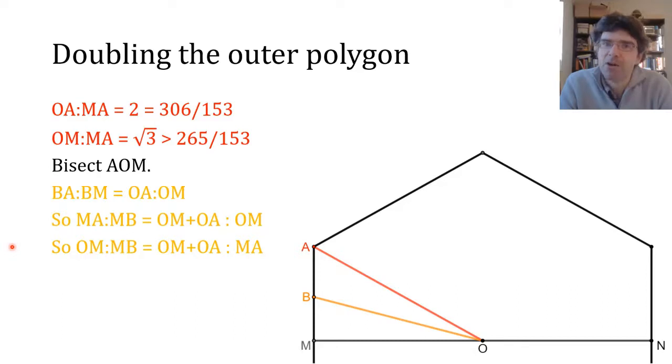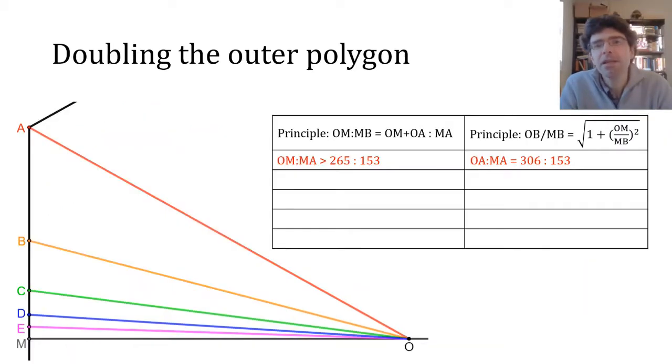And meanwhile by Pythagoras theorem we can also express OB over MB in terms of OM over MB, which is what we just found an expression for. And these two principles are actually all we need to approximate the side lengths of polygons with more and more sides, doubling each time in an iterative process. And what's needed is we can basically keep expressing them as ratios to 153. So OM to MB is the sum of the two ratios in the first line of the table, so it's just over 571 to 153.